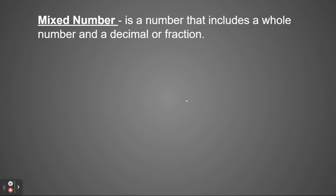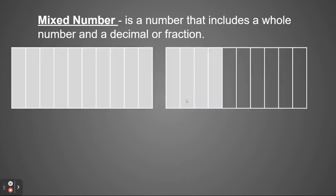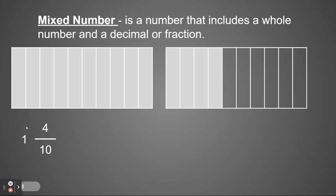We can also use mixed numbers. A mixed number is a number that includes a whole number and a decimal or a fraction. We've talked about mixed numbers with fractions, but now let's look at them as a decimal. In this picture, I have one whole that's filled in and then another partial part broken into ten pieces with one, two, three, four shaded in. This model represents one whole and four tenths. I would write that as a fraction with one as the whole number and four tenths as the fractional part, and as a decimal with one in the ones place, decimal point, and four in the tenths place — the first place value after the decimal point.